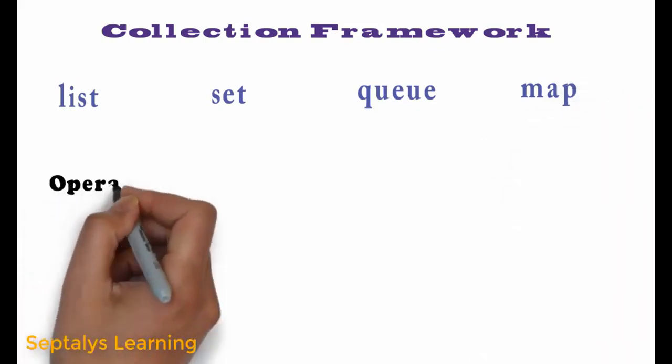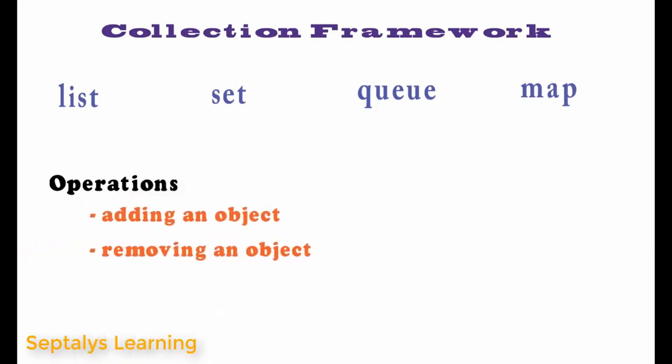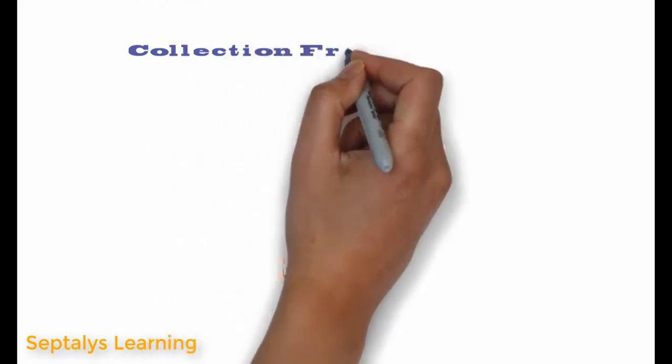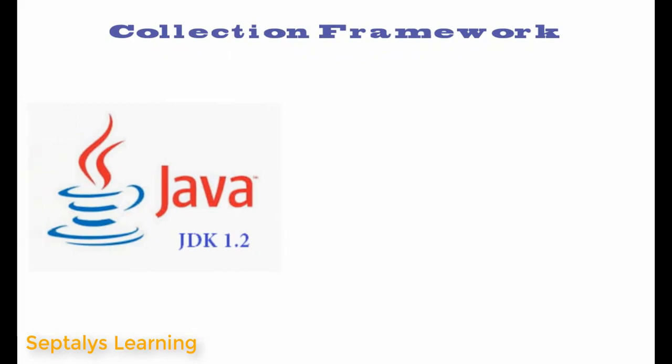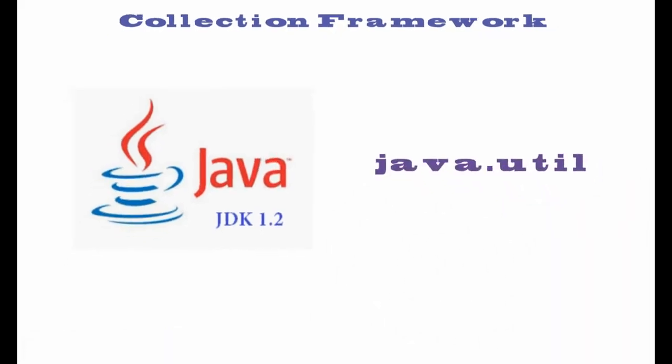We can perform operations like adding an object, removing an object, or sorting objects without much hassle. The collection framework, or simply collection, was introduced in Java from JDK 1.2 and it is placed in the java.util package.